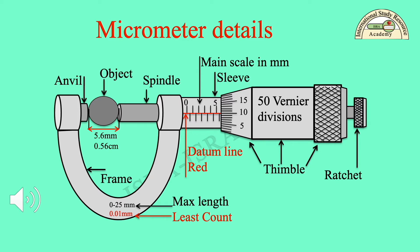A horizontal red datum line is also visible on the sleeve, which is used to find the matching Vernier division in vertical order on the thimble. The maximum length of measurement, 0–25 mm, is written on the bottom of the frame along with the least count of 0.01 mm of this instrument.